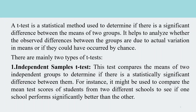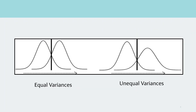In the independent sample T-test, there is an assumption about variances — are the variances of the two groups equal, or are they not equal? In both scenarios, we will have to activate the relevant option in Excel.